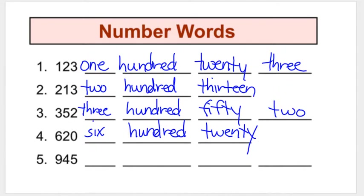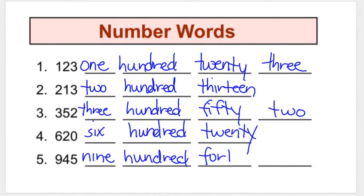And last, number five is a nine, a four, and a five — we say nine hundred forty-five. Okay students, finish writing those words and then you are finished. If you need to watch the video again, you can watch the video again.